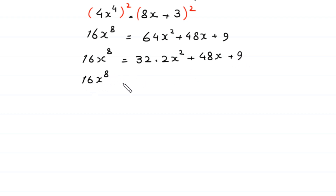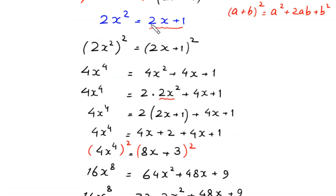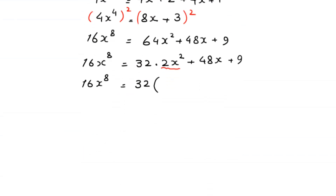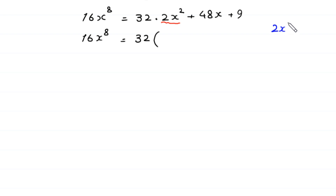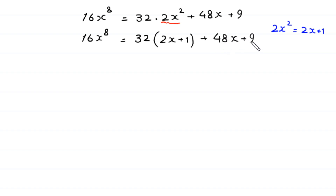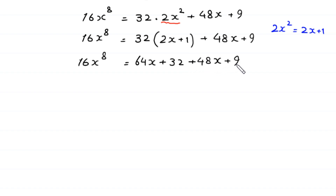So 16x to the power 8 equals 32 times 2x squared plus 48x plus 9. In place of 2x squared we put the value 2x plus 1, giving 16x to the power 8 equals 32 times (2x plus 1) plus 48x plus 9, which equals 64x plus 32 plus 48x plus 9.